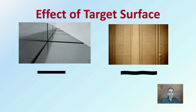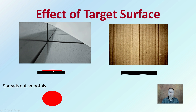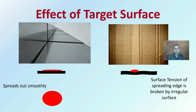The effect of the target surface — whether it's that hard, flat, almost shiny surface, or this irregular, more porous surface — can impact how blood spreads when it hits. It could spread out very smoothly on a smooth surface, which makes sense. In this case, we see the blood droplet impacting, with the surface tension spreading edges broken on an irregular surface, leading to a different appearance. Knowing that surface is key to interpreting the final result we observe.